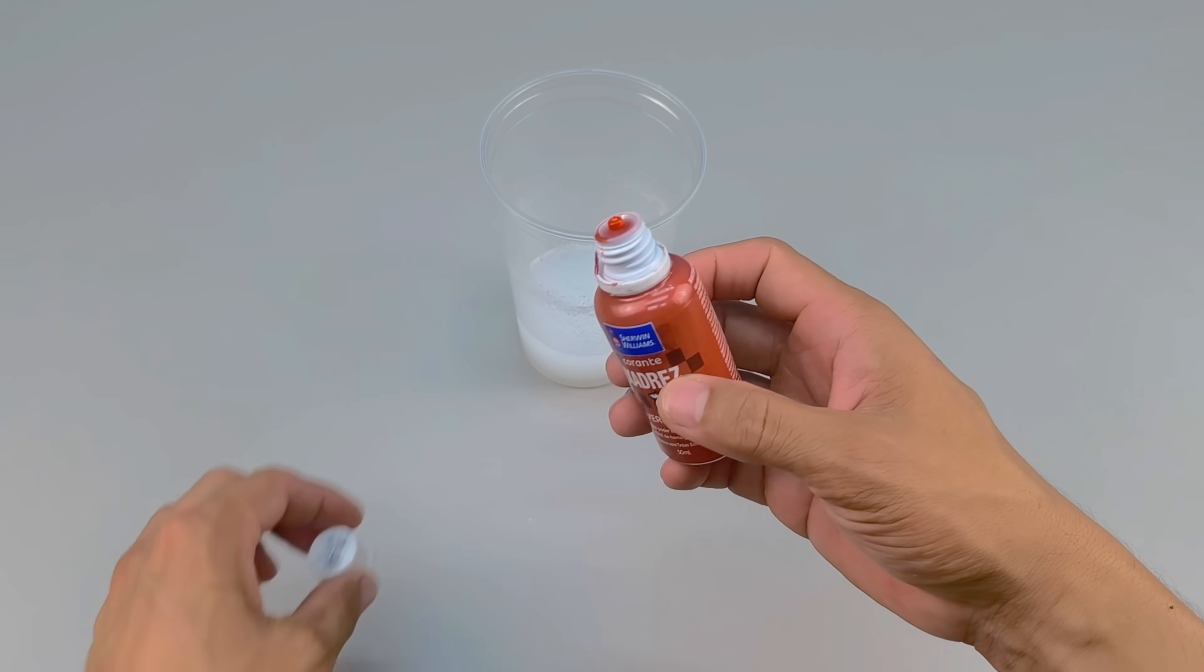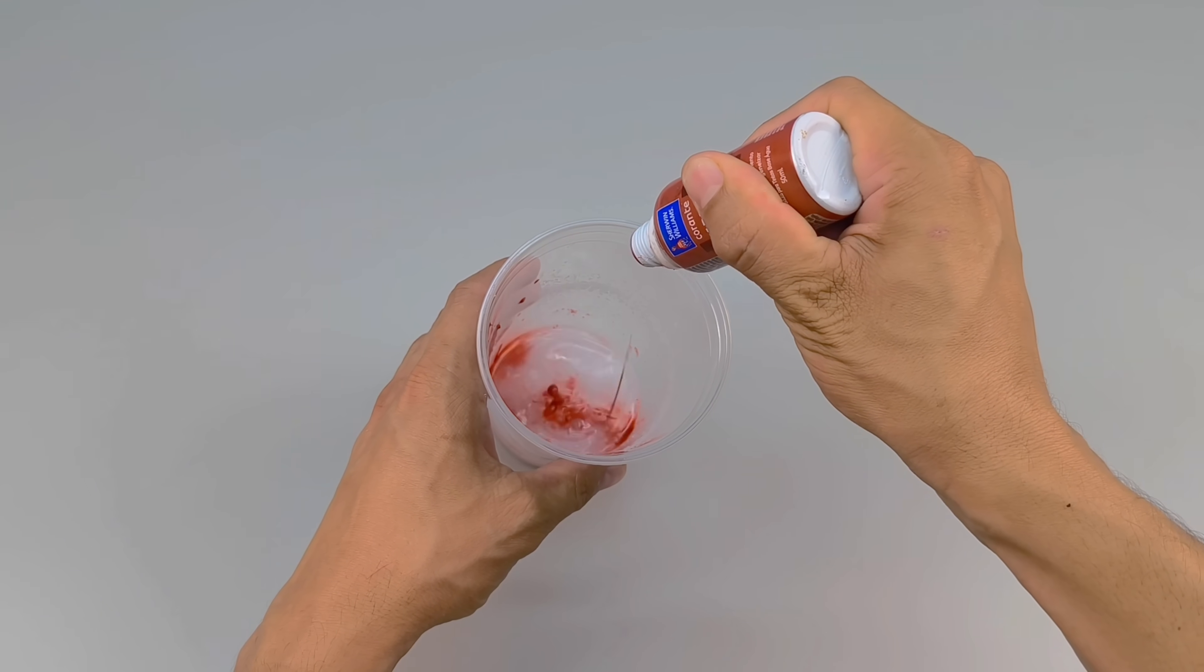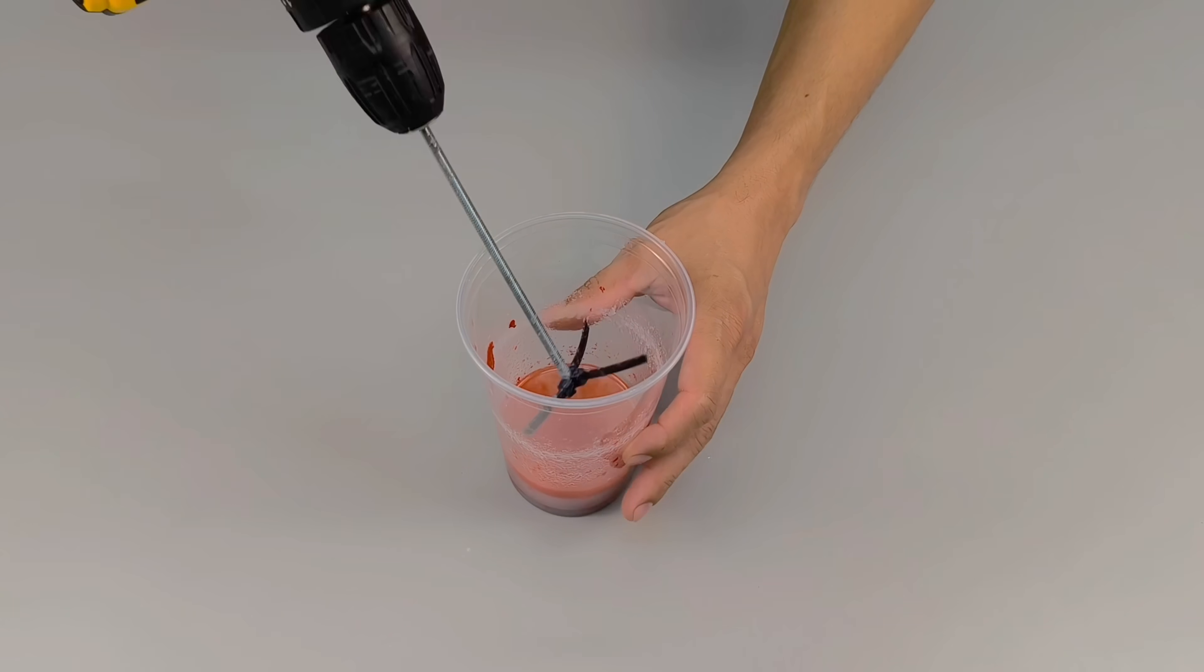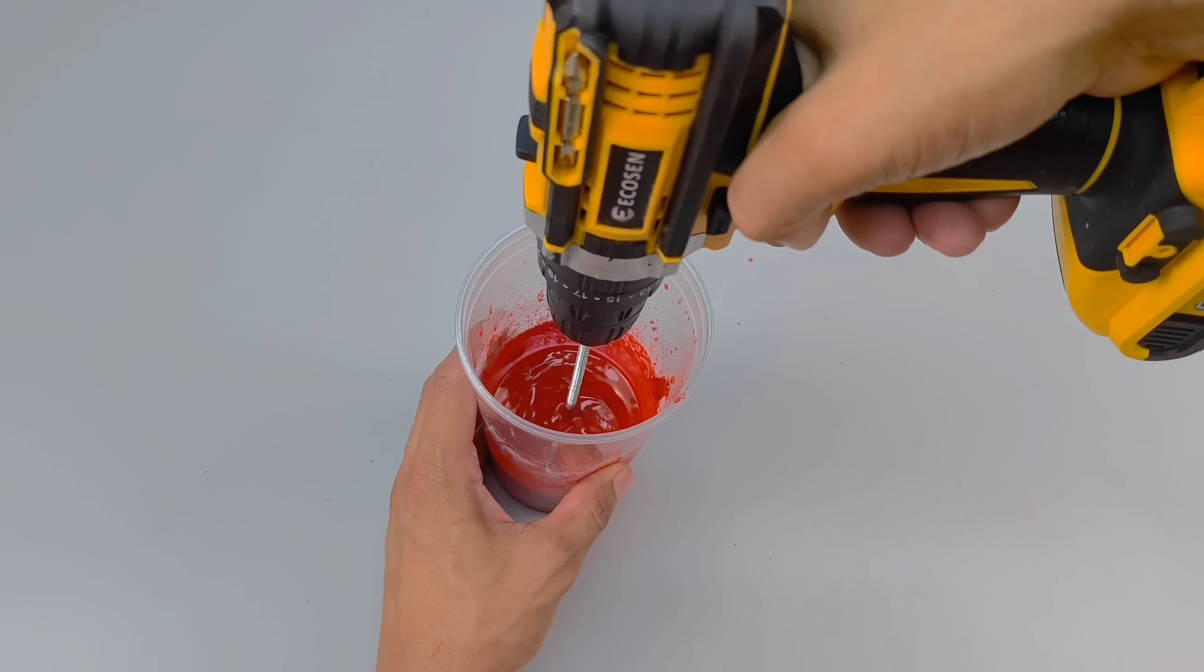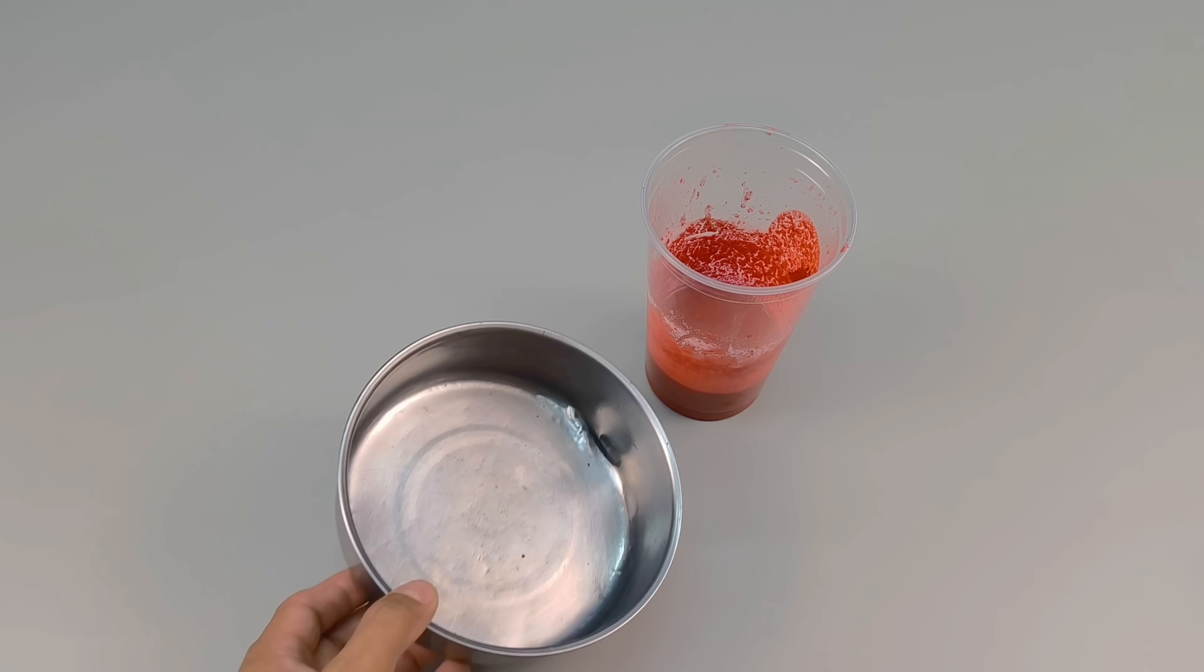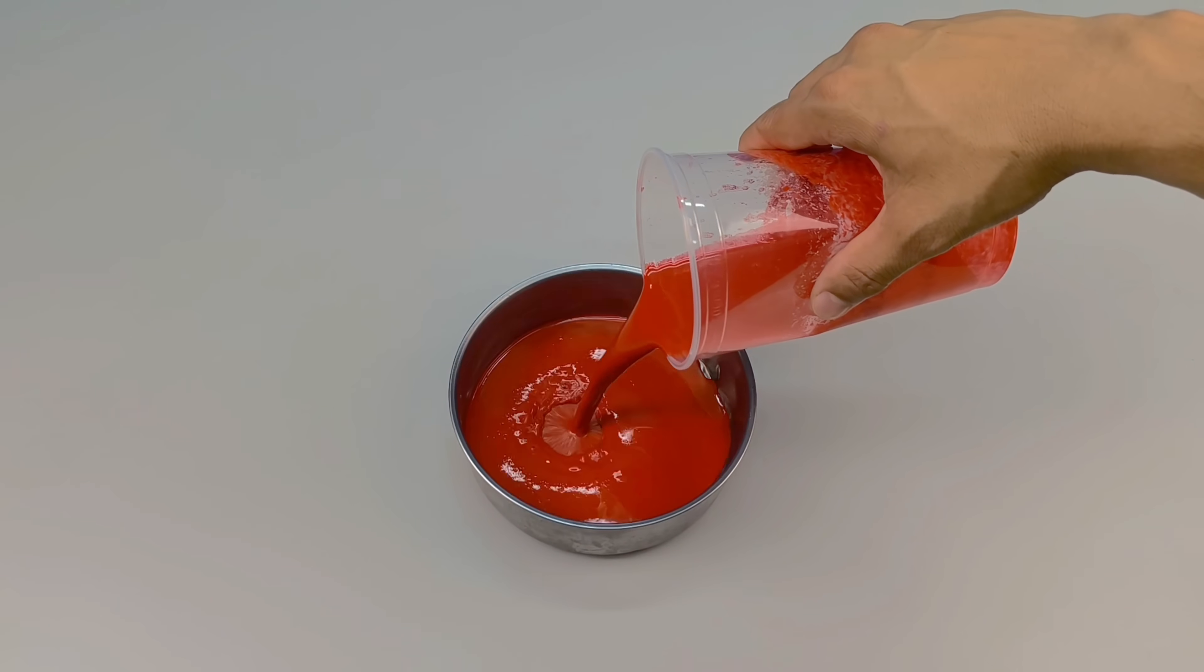But there's still something missing. Like a painter facing a blank canvas, I add the third ingredient: liquid pigment. I chose red, vibrant and intense, but you can use whatever color best suits your idea. A generous amount is enough to bring the mixture to life. The liquid gains hue and depth and is ready to use. Carefully, I pour everything into a convenient container, ready for the next step.